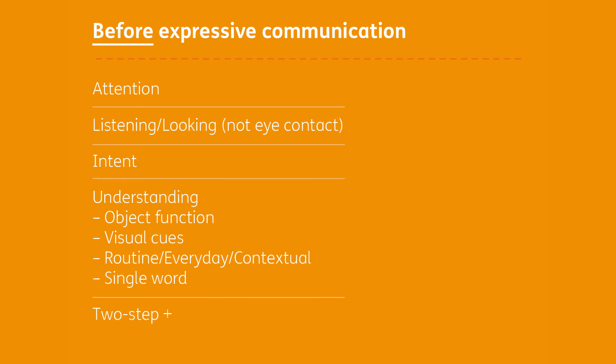It's essential to be a good communicator that there's intent to communicate — we need to know that our child understands that communication has a function, a purpose, and is useful. And then the massive thing we need before we can expect spoken language is an understanding of words. Understanding can be broken down into more stages. The very basic level, which comes really early on, is object function awareness — understanding that when we see a cup, it contains a drink and we can drink from it. A child can understand all of that just by seeing the object and doesn't need to hear the word.